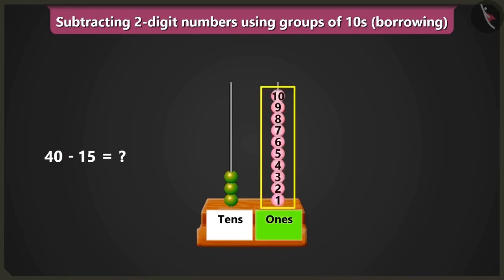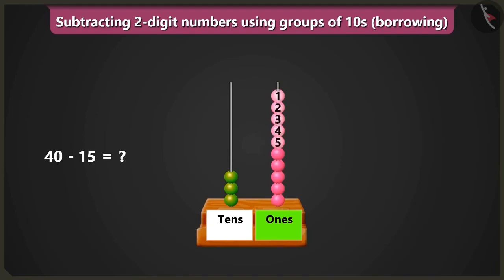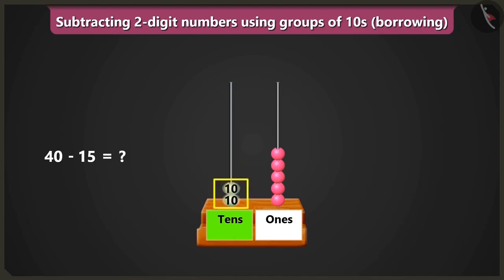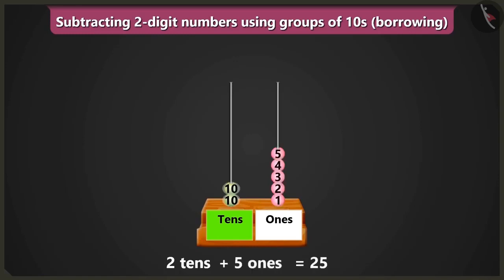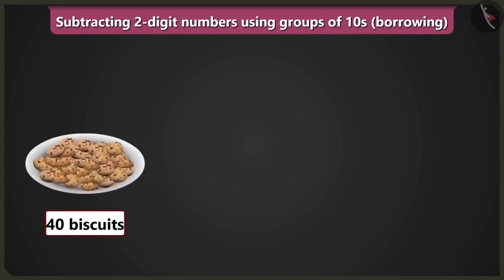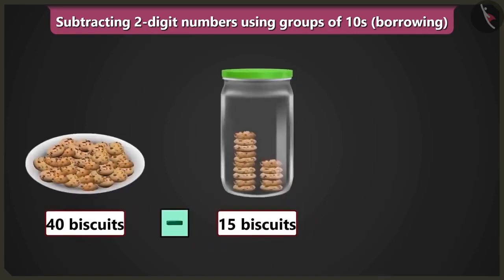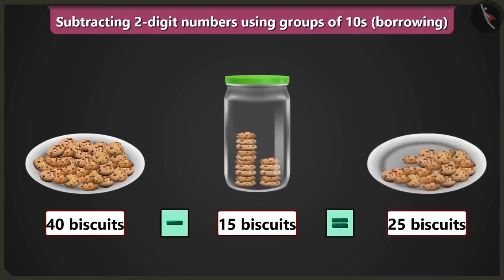So we will remove 1 bead from the box of tens and put 10 ones — 10 beads — in the box of ones. Now, to subtract 15 from 40, first of all, from the box of ones we will remove 1, 2, 3, 4 and 5 beads. So, 1, 2, 3, 4 and 5 beads would remain. Now, we will subtract in the box of tens. If we remove 1 bead from 3 beads, then 2 beads would remain, which means 2 tens. So now 2 beads would remain in the box of tens and 5 beads in the box of ones. It will be 2 tens plus 5 ones equal to 25.